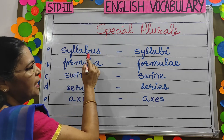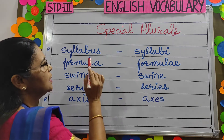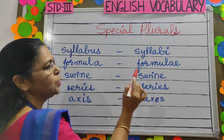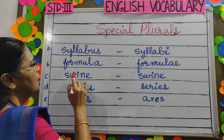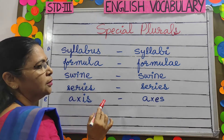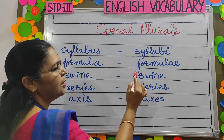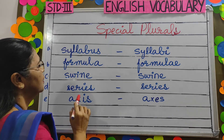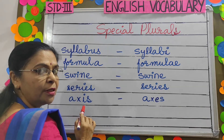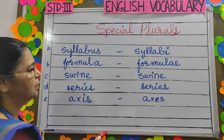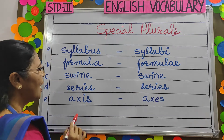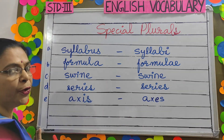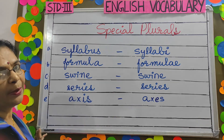The first word is syllabus, and the plural for syllabus is syllabi — the letters 'us' change to 'i' in the plural. The next word is formula, and the plural is formulae — we add the letter 'e'. Swine stays swine — no change; singular and plural remain the same. Series also stays series — no change.